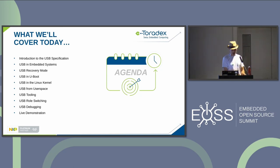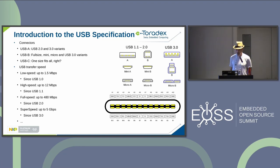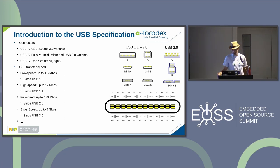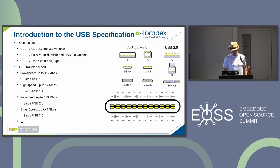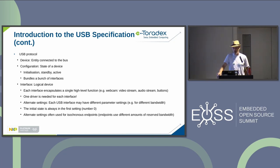The USB specification — most of you probably know the whole connector disaster that kind of converged to USB-C, now one size fits all. Then of course we have all the different speeds: from the good old days — low speed, full speed, high speed, super speed — and now even faster variants. I think 40 gigabit is the fastest with USB 3.2 generation.